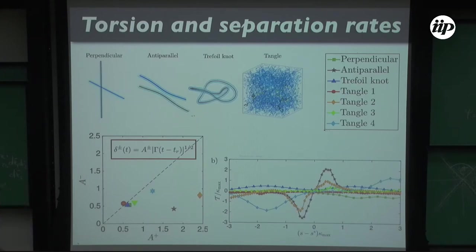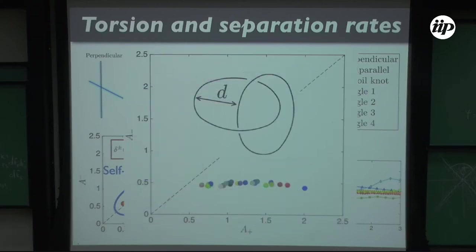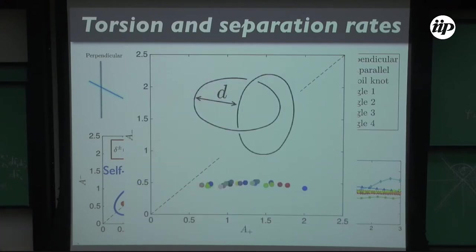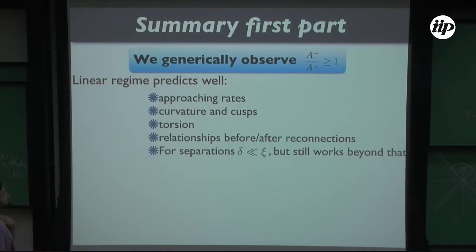We then did a more systematic study: two linked rings with varying offset distance, running about 30–40 simulations changing the ring size and initial distance d, measuring a⁺ and a⁻ each time. It turned out that for all possible cases, a⁺ is always larger than a⁻. So this is really something fundamental about reconnection. The main question is: why?